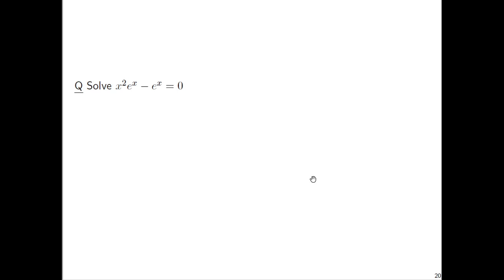Now let's solve x squared e to the x minus e to the x equals 0. Follow the order of operations, you can't do e to the x minus e to the x first. Let's factor out an e to the x. We'll have e to the x times the quantity x squared minus 1 equals 0. Now we can apply the zero product property.